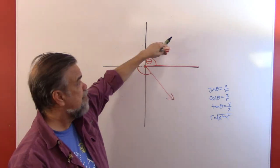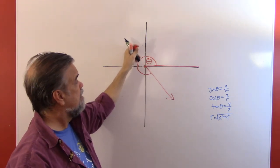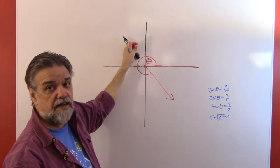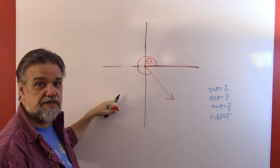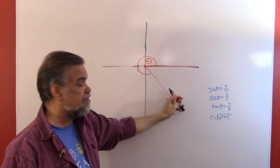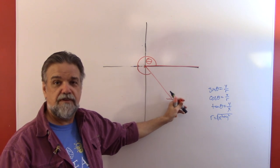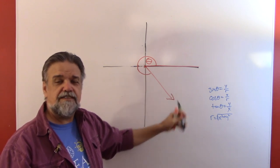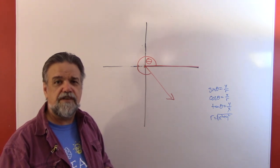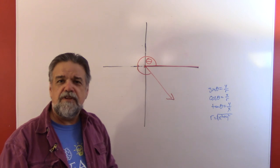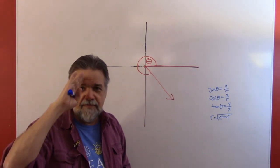To summarize the signs by quadrant: in quadrant 1, everything is positive. In quadrant 2, sine is positive but cosine and tangent are negative. In quadrant 3, tangent is positive but sine and cosine are negative. In quadrant 4, cosine is positive and the other two are negative. This expands our idea of what sines, cosines, and tangents are. We'll continue in the next video.